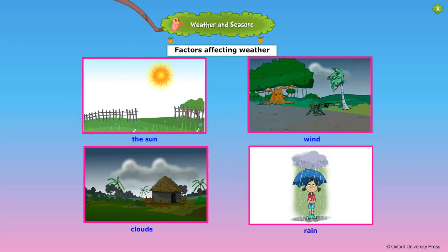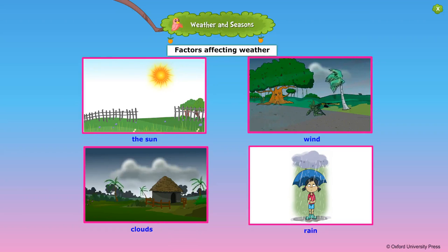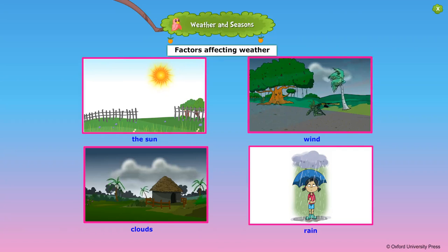People sweat a lot on hot sunny days and feel thirsty. Water from water bodies such as rivers, lakes, and oceans gets heated and converted into water vapor. During cloudy days the air feels sticky and moist. People have cool weather because of clouds.